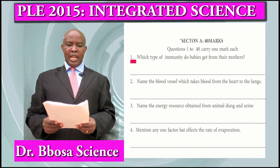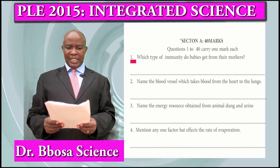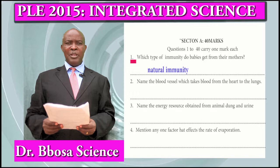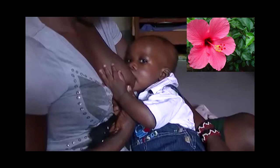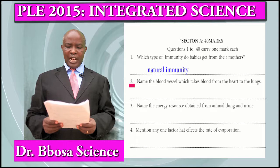Question 1: Which type of immunity do babies get from their mothers? That is natural immunity. Natural immunity may be obtained from suffering from the disease and recovering from it.